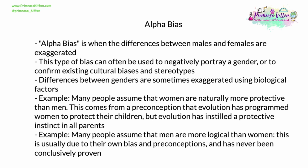To take a second example, many people assume that men are more logical than women. This is usually down to bias and preconceptions rather than any hard evidence or facts — this has never been conclusively proven by psychology or indeed by any other sciences. Both of these are examples of alpha bias.